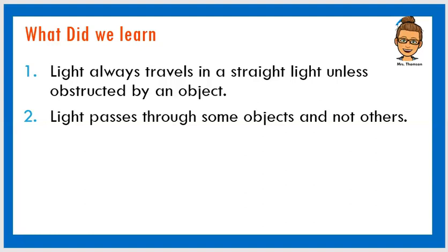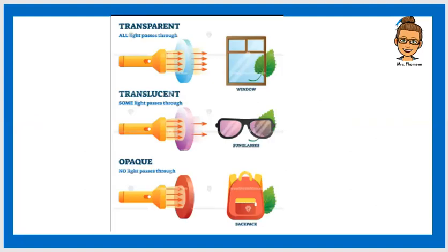And we also did some experiments where we learned that light passes through some objects and not others, right? And we learned about transparent objects where all the light passes through that object so that you can see what is on the other side.